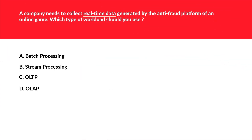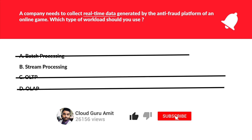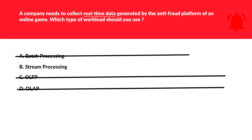This question is related to real-time data. If you've followed along, the answer is stream processing — option B. Stream processing handles real-time or non-stale data, making it a perfect fit for an anti-fraud platform. So this is the correct option.